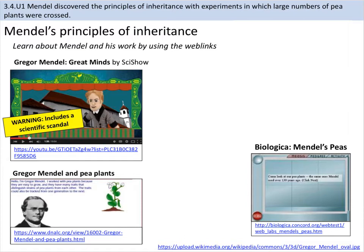He ultimately became the father of genetics through really meticulous note taking and paying attention to details. He did a series of experiments growing pea plants — as a monk, he was responsible for helping grow food for the monastery. He was particularly responsible for growing pea plants, and he noticed certain traits: sometimes there would be yellow or green coloring on the peas, a smooth or wrinkly shell, tall or short plants.